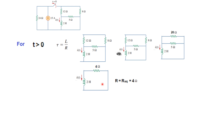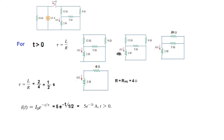Now we plug this 4 into the formula. τ = L/R = 2 henry divided by 4 = 1/2 second. We plug in the values: I0 is 5 ampere, times e raised to the power minus t divided by τ (which is 1/2). After manipulating, we get i(t) = 5e^(-2t) ampere. This is the final answer. I hope this gives you an understanding of how to solve this type of problem. Thank you.